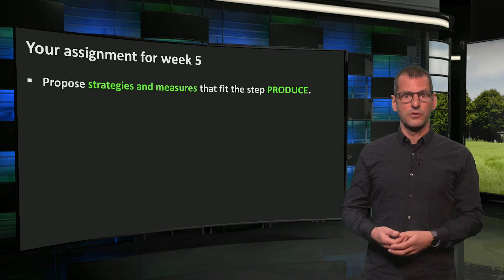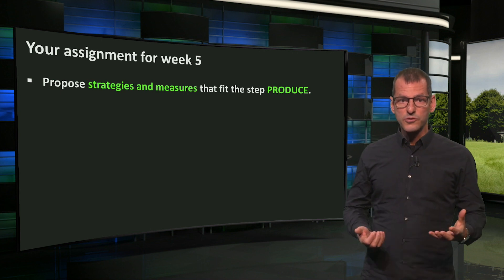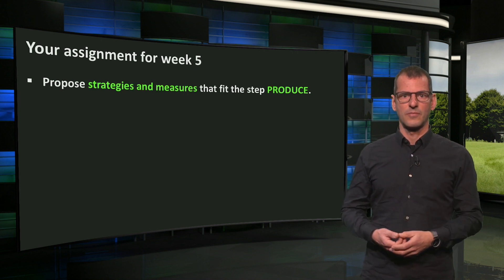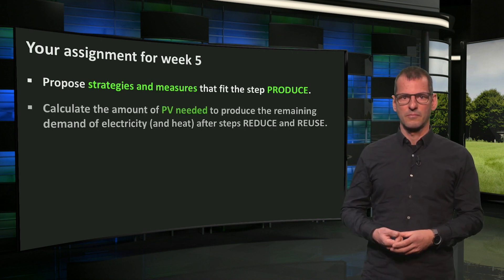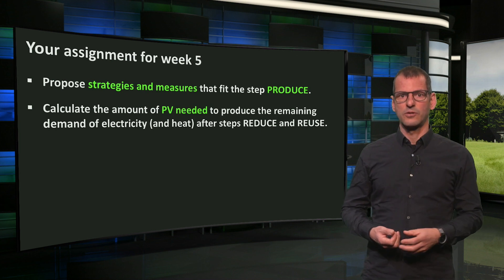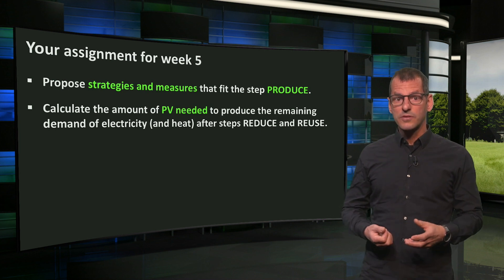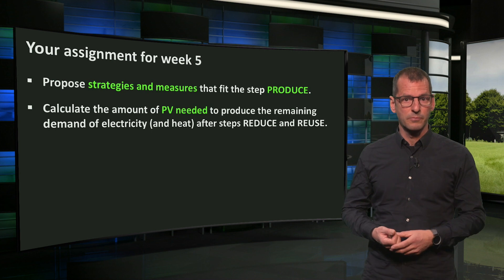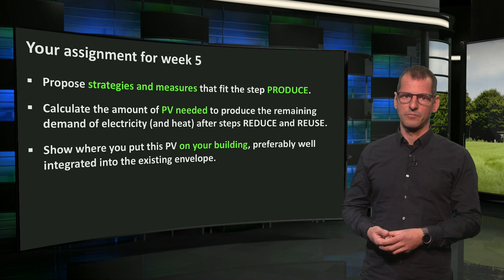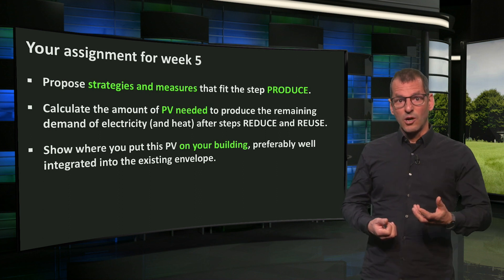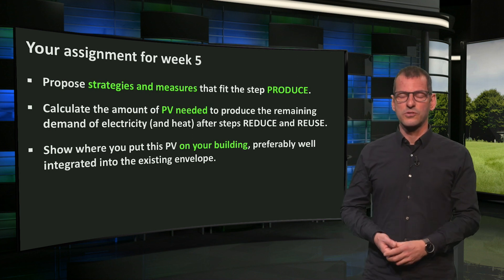This week you will see a lot of options for renewable energy production. After the steps you took in the briefs before, which forms of renewable energy do you still need? Propose the strategies and measures that you deem suited for your building. Calculate the remaining demand of electrical energy, which has to be supplied by solar panels — photovoltaics. How much of these and which type of PV do you need for your building? Where do you put this amount of PV? Draw it in your schemes. I hope you can integrate the PV required into your building envelope well, to avoid unesthetical use of solar technology.